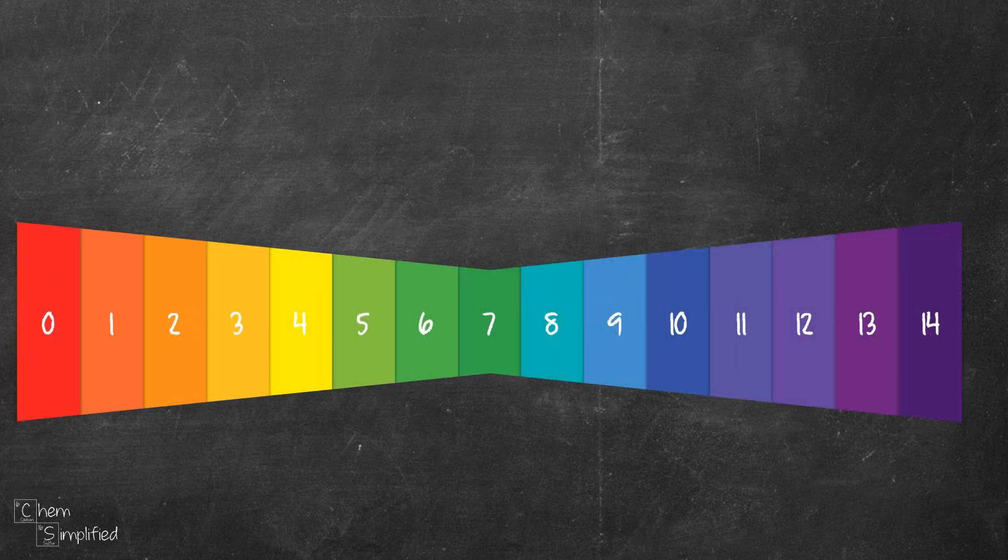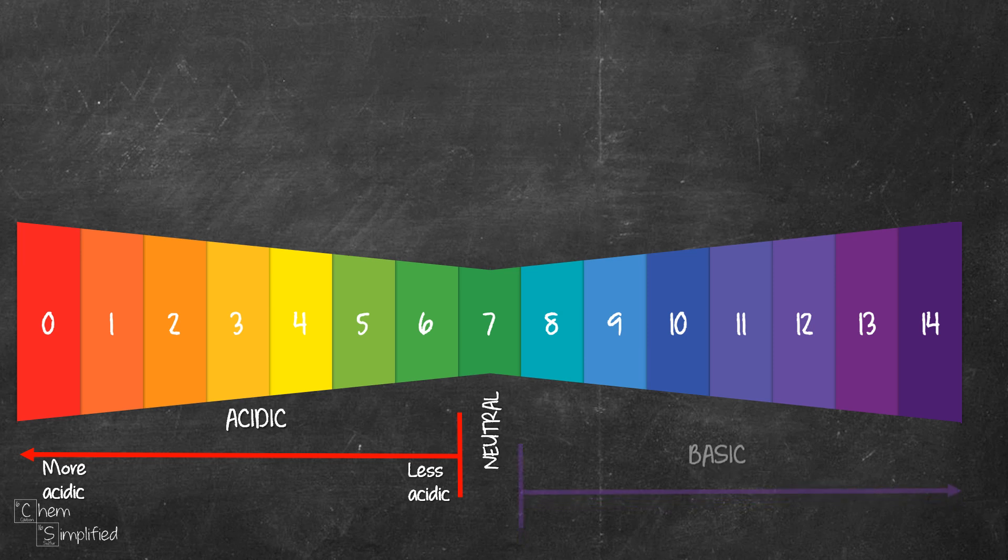The pH scale commonly runs from 0 to 14. Solutions with pH 7 are neutral, whereas anything below 7 is acidic. As the pH value decreases from 6 downwards, the solutions become more and more acidic. Similarly, anything above 7 is basic. The solution becomes more and more basic as the pH increases from 8 onwards.